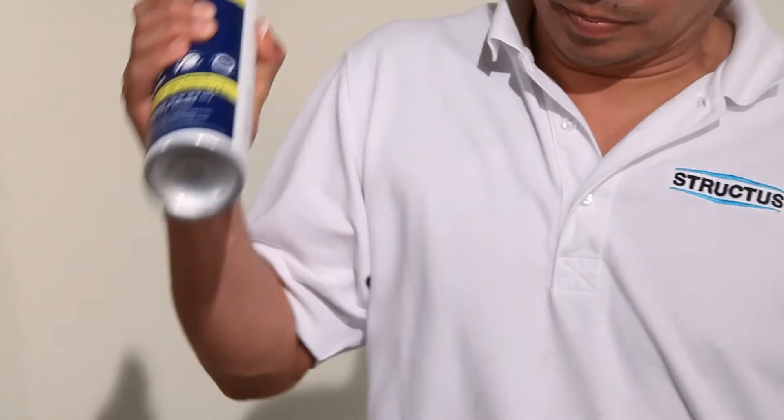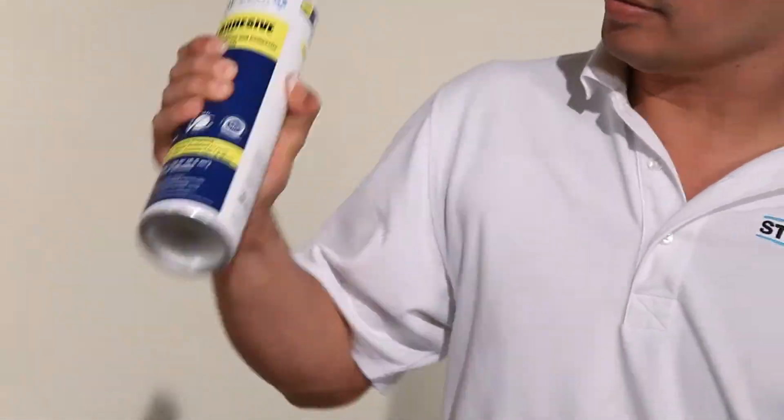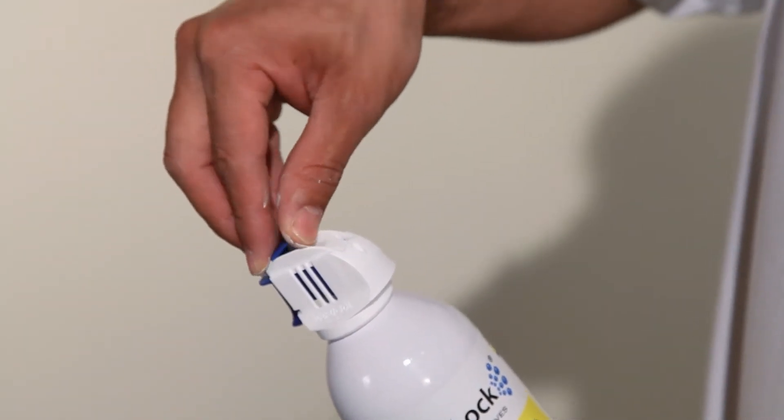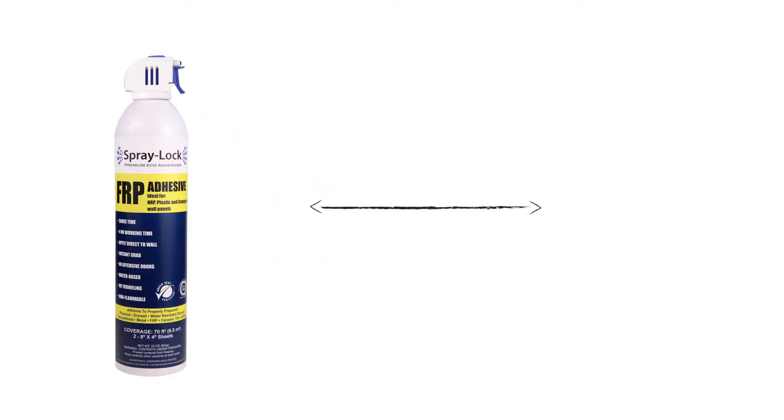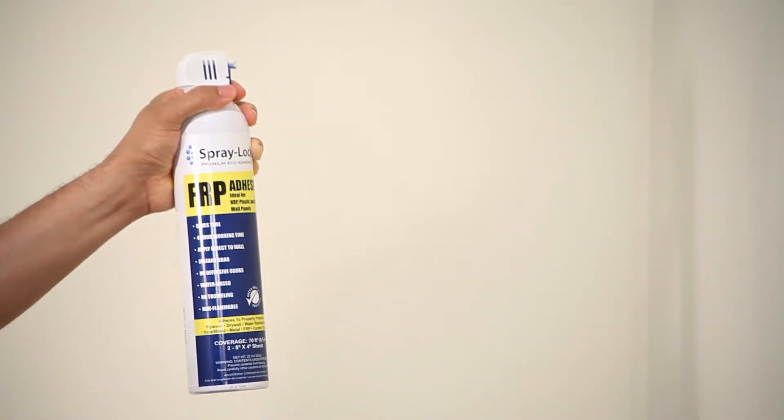Shake aerosol can well. Remove the safety tab. Hold upright approximately 18 to 24 inches horizontally from the substrate. Aim and pull the trigger.